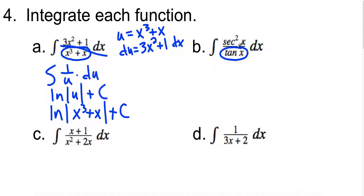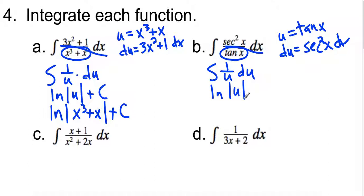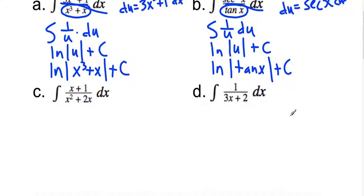So a lot of this is knowing your derivatives and recognizing some patterns. But if we let u be tangent x, then du is secant squared x dx, which is exactly what you have here. So this becomes 1 over u du. You integrate natural log of u plus c, and then plug back in.